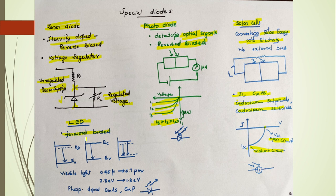The LED is a forward biased p-n junction. During electron transition from the conduction band to the valence band, or from donor energy level to acceptor level, light is emitted. To obtain visible light of a particular color, we select a material whose forbidden gap energy falls in the range of 1.8 to 2.8 electron volts, corresponding to visible light wavelengths.